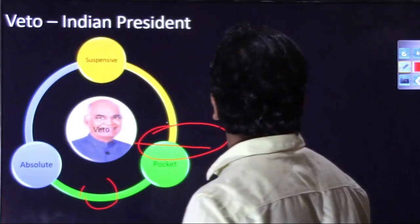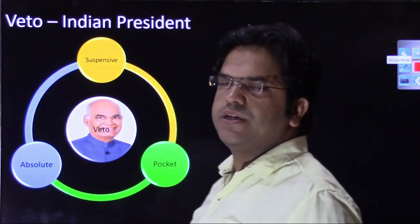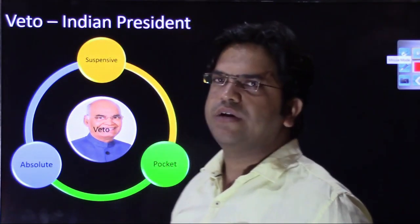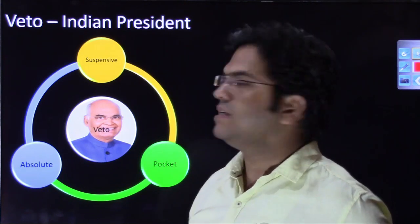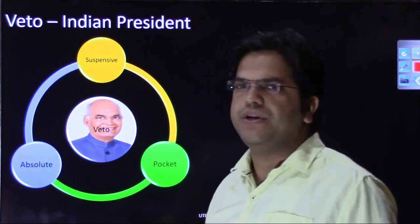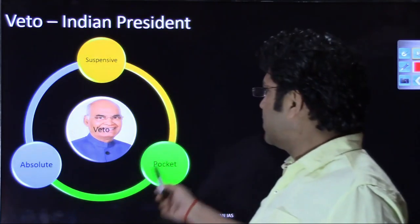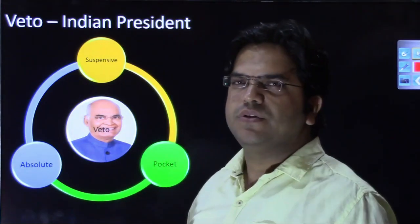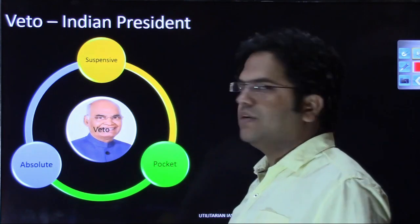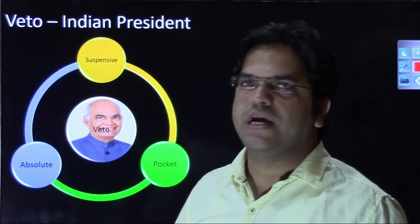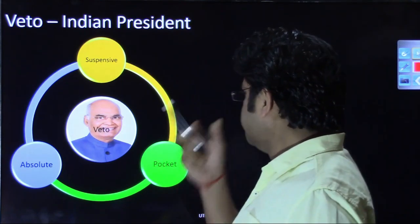Now let us discuss the Indian president's veto. While the US president had four types of vetoes, the Indian president does not have the qualified veto. The Indian president has only three vetoes: absolute veto, suspensive veto, and pocket veto. The qualified veto — that additional veto the US president has — is not available to our president.